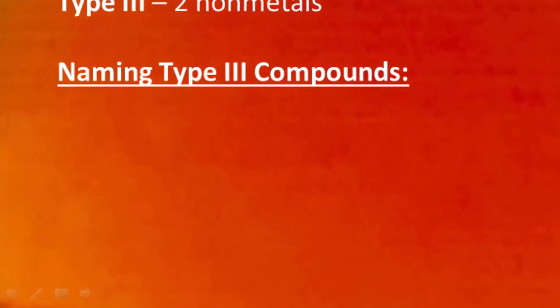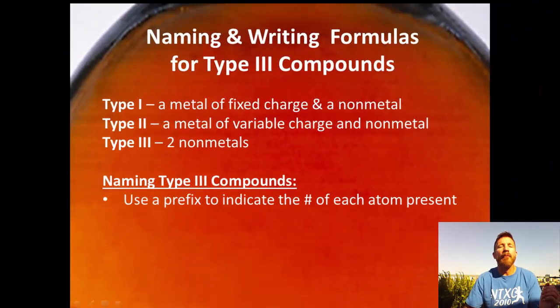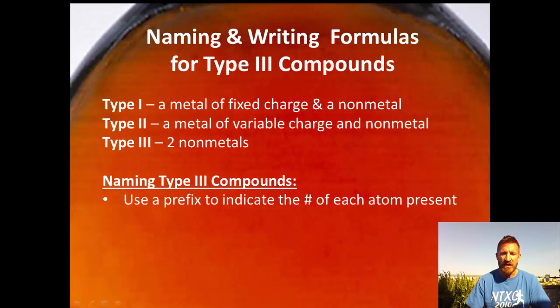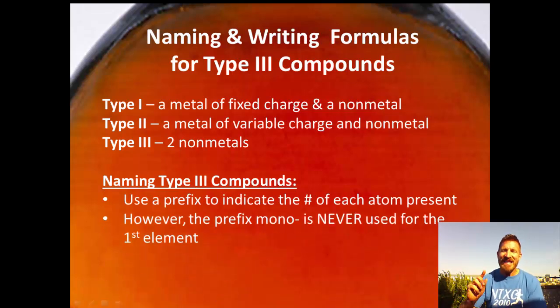Naming type 3 compounds: a prefix is used to indicate the number of each atom present. There's only one situation where you don't use a prefix - you do not use a prefix if there's only one of the first element. The prefix mono, which means one, is never used for the first element. Remember, type 3 compounds are when you have two non-metals.